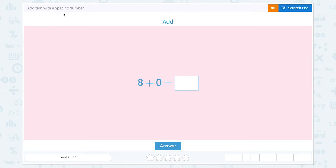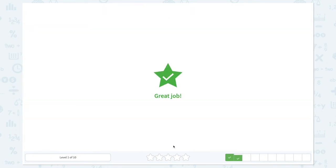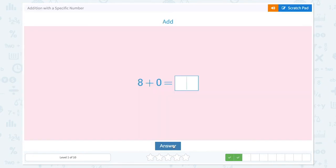Addition with a specific number. Add 8 plus 0 equals. 0 is the same as none, so 8 plus 0 is 8. Great job. Add 5 plus 0 equals 5. Great job. Add 8 plus 0 equals 8.